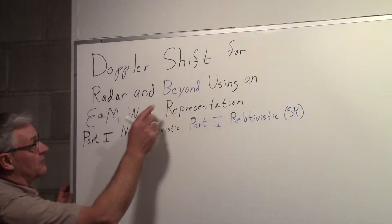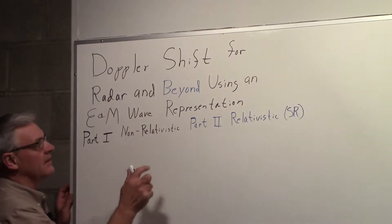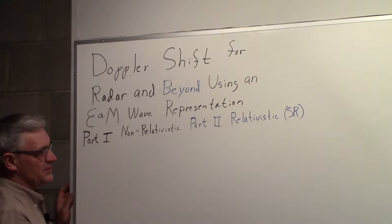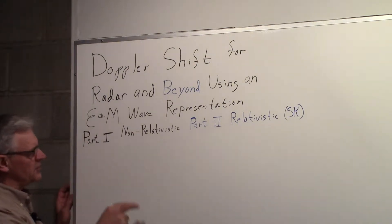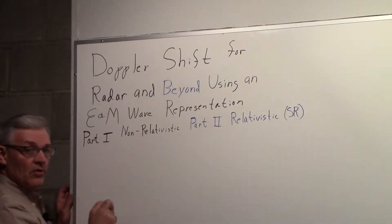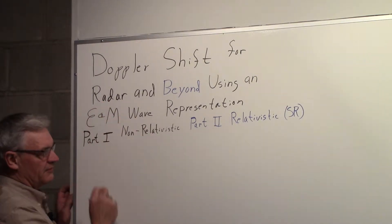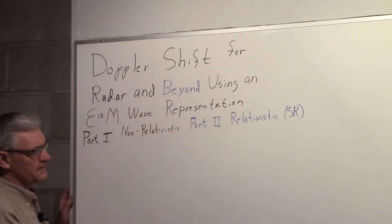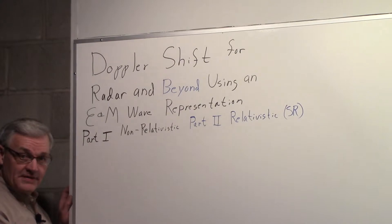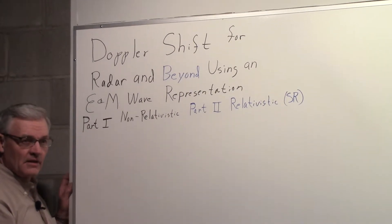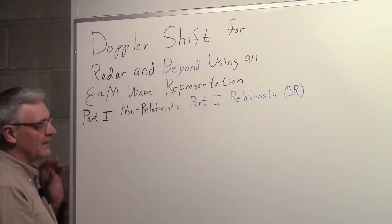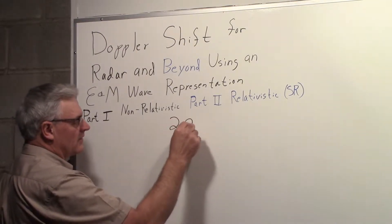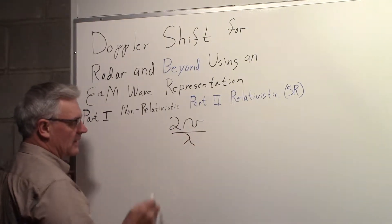We'll take a look at Doppler shift for radar and beyond using an electromagnetic wave representation. We'll have a part one which will be non-relativistic standard radar, and part two will be relativistic. If you ask a radar engineer what is the equation for Doppler shift, the radar engineer will tell you it is 2V over lambda.